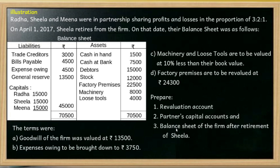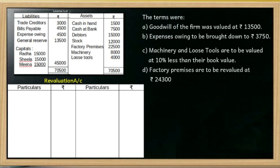Revaluation Account, Partners Capital Account, Balance Sheet. The difference in value goes into the Revaluation Account. The goodwill of the firm was valued at Rs.13,500.